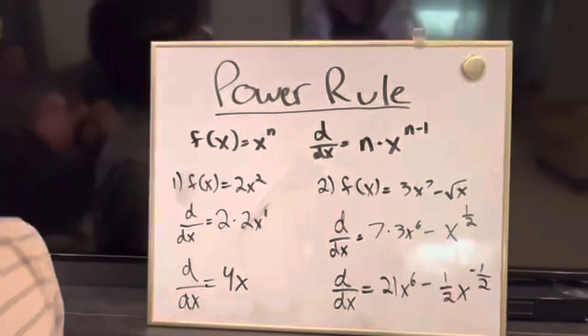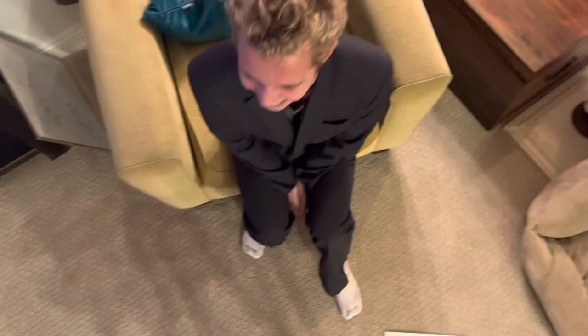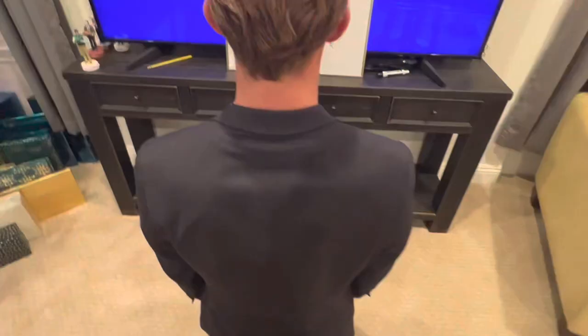Now I get it! Brandon, the board is yours. Power rule for 1,000. What is today's daily double? Today's daily double question: Derive 4x cubed over 3 plus 5 over x squared minus x.